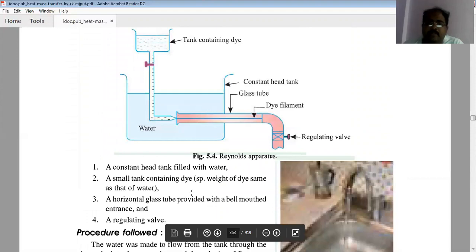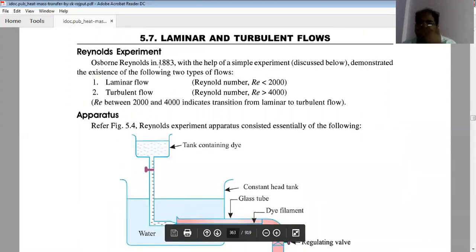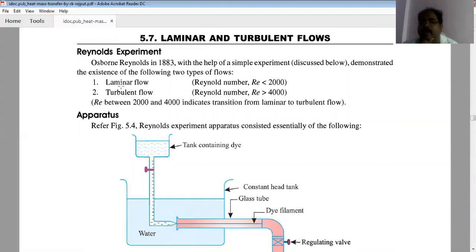Reynolds concluded that when the Reynolds number is less than 2000, it is laminar flow. If Reynolds number is greater than 4000, it is turbulent flow. Between 2000 and 4000, this is called the transition state.